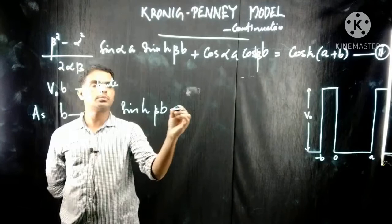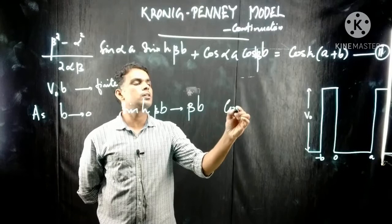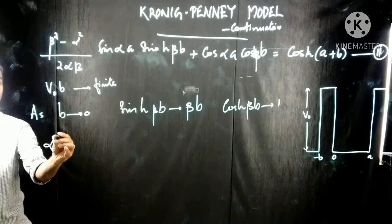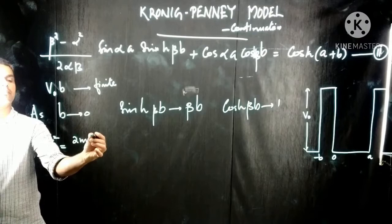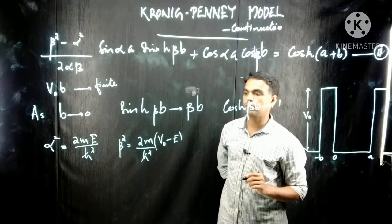sinh(βb) tends to βb, that is β times b, and cosh(βb) tends to 1. Also, α² is equal to 2mE divided by ℏ², and β² has a similar definition. So these are the values of α² and β².